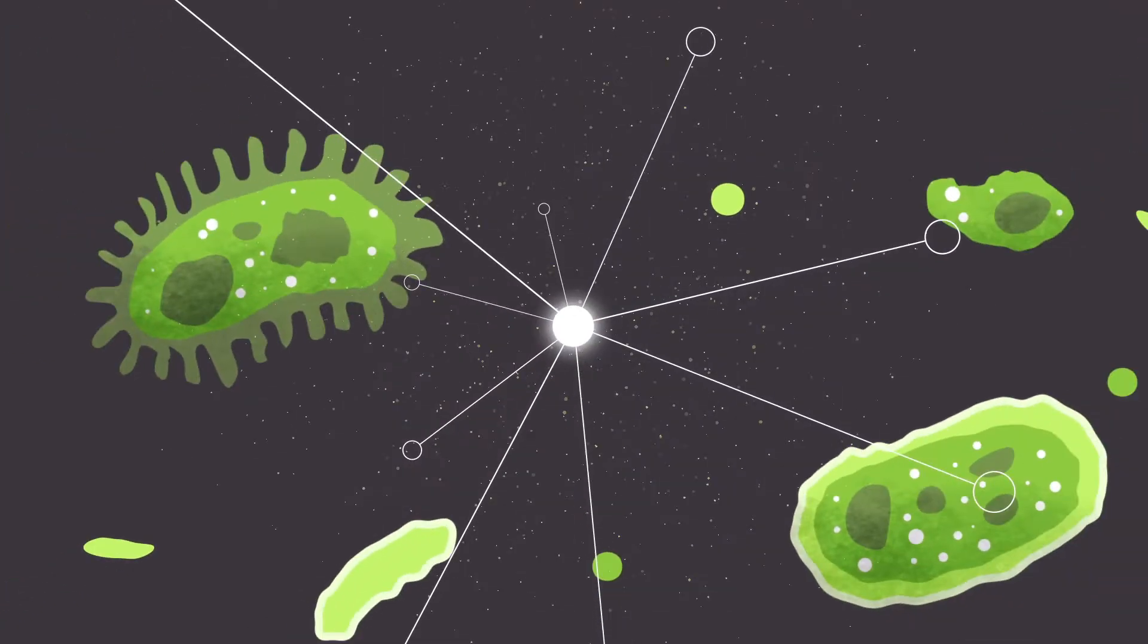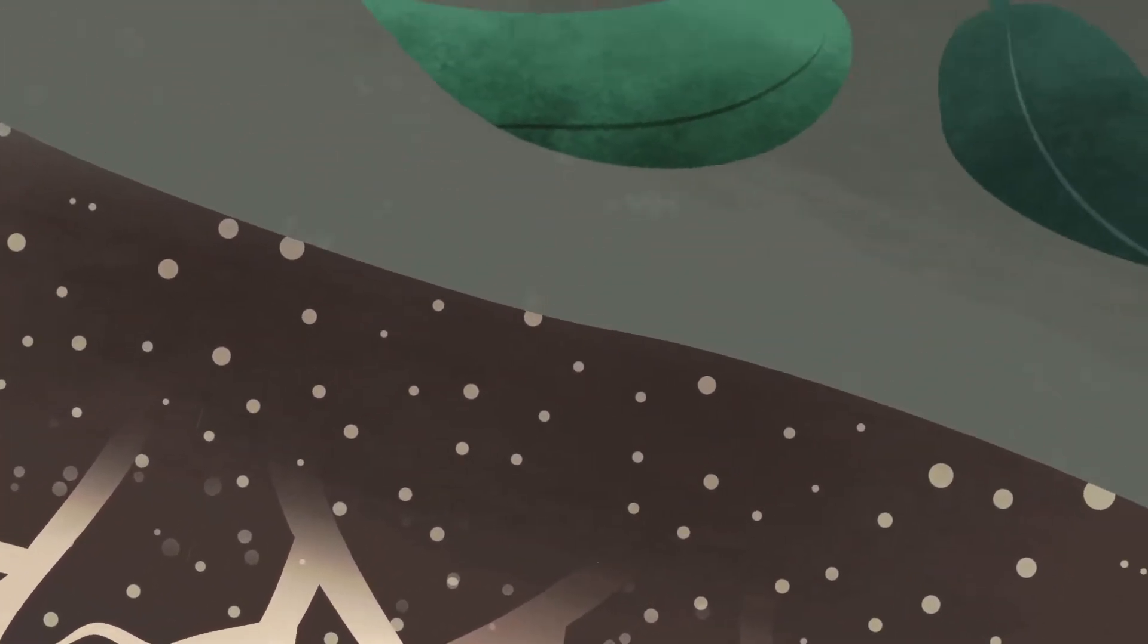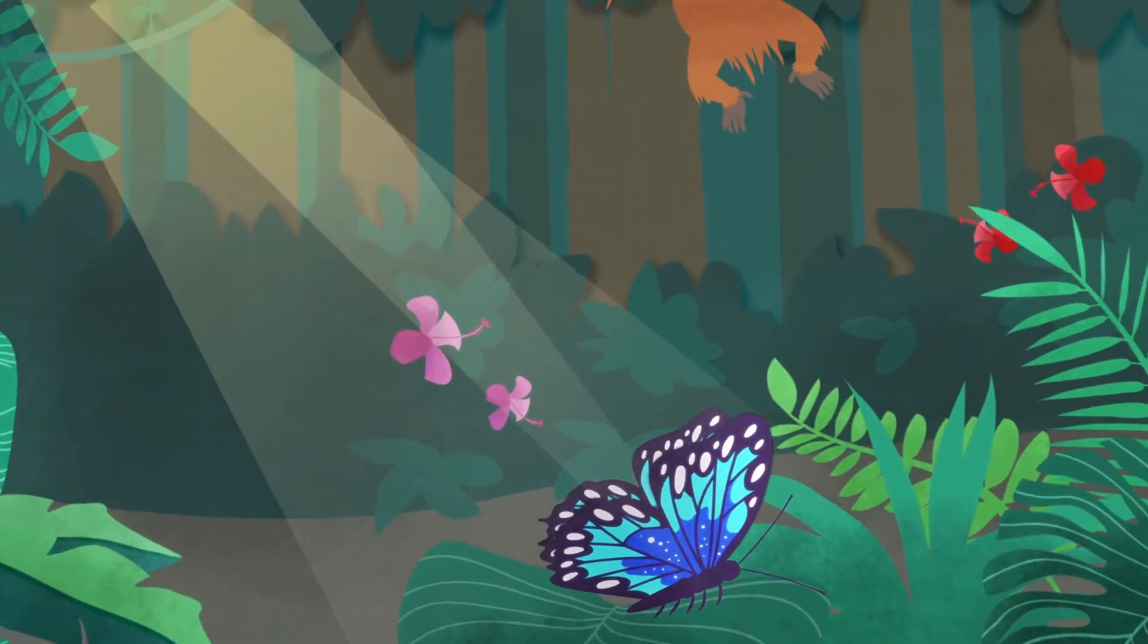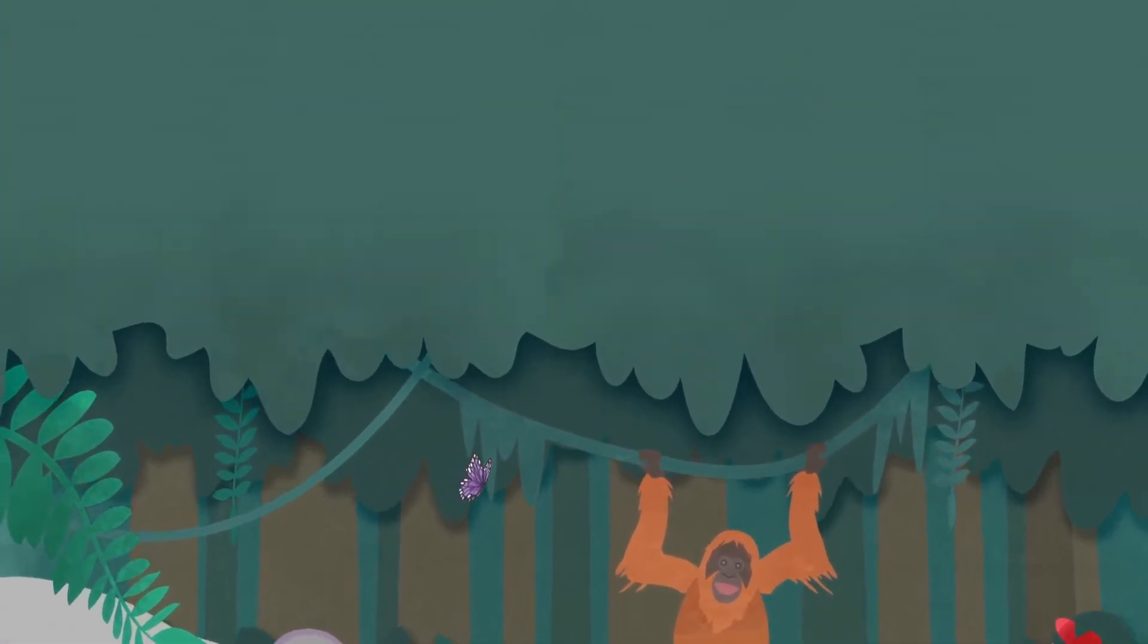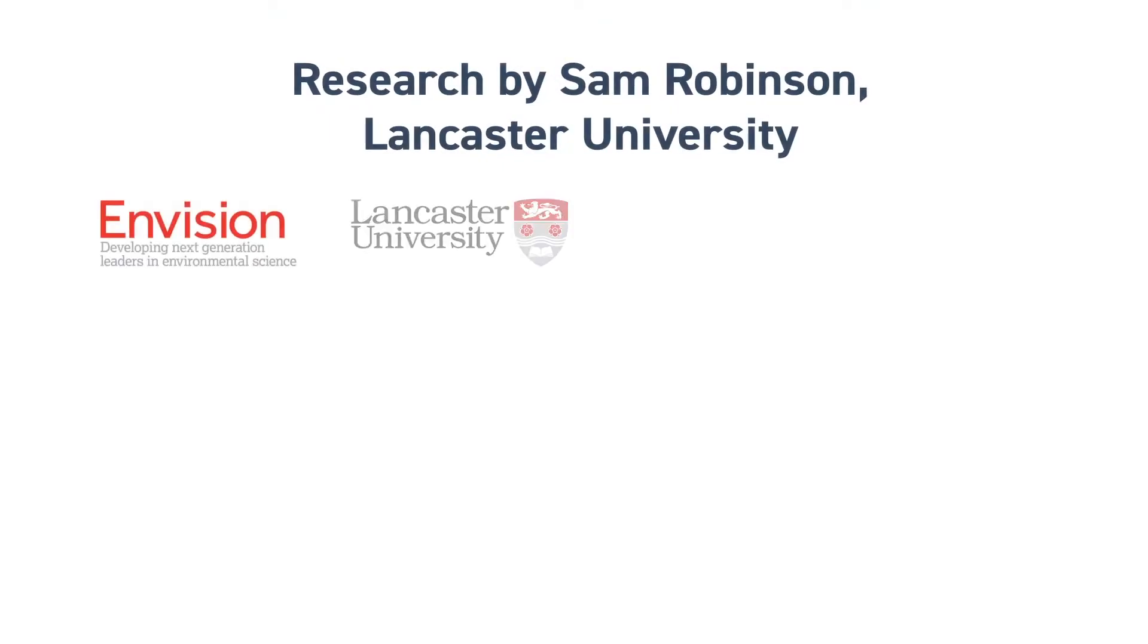Envision scientists at Lancaster University are conducting pioneering research to find links in these vastly complicated ecosystems. For only by understanding the impacts of our actions on a global scale can we all agree upon what's good for our planet and choose a sustainable future that preserves these incredible and vital ecosystems.